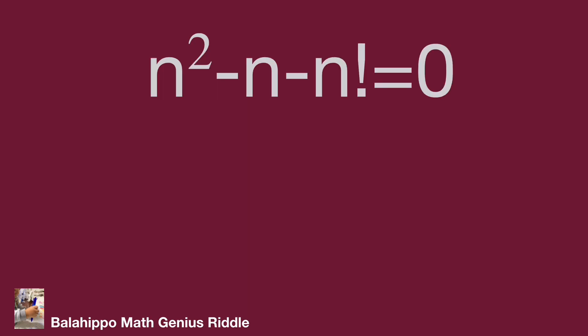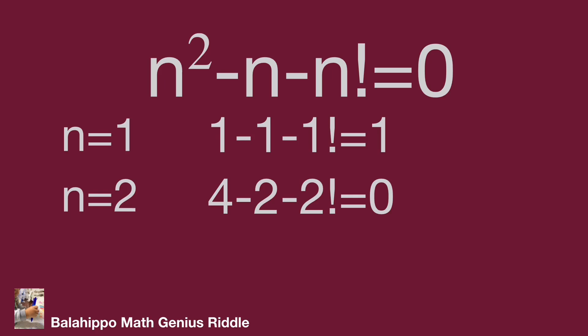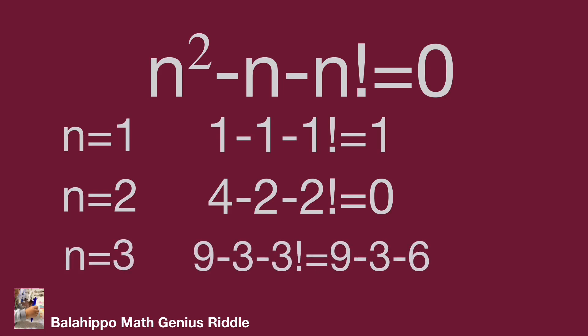Let's check each candidate. When n equals 1: 1 minus 1 minus 1 factorial equals 1, which is not equal to zero, so n equals 1 is not the answer. When n equals 2: 2 squared minus 2 minus 2 factorial equals 4 minus 2 minus 2 equals 0 — so n equals 2 is an answer. When n equals 3: 3 squared minus 3 minus 3 factorial equals 9 minus 3 minus 6 equals 0 — so n equals 3 is also an answer.